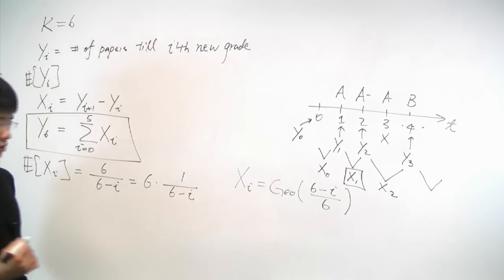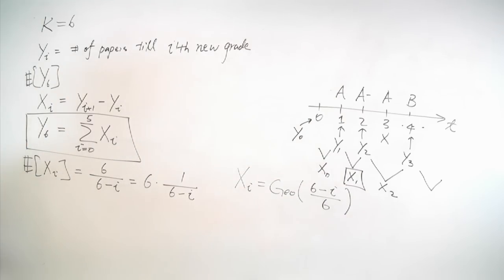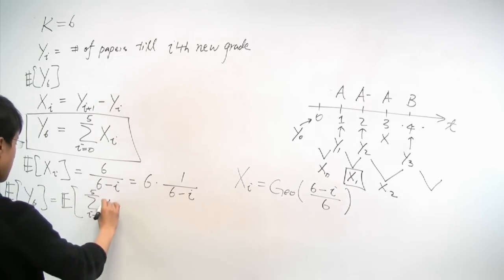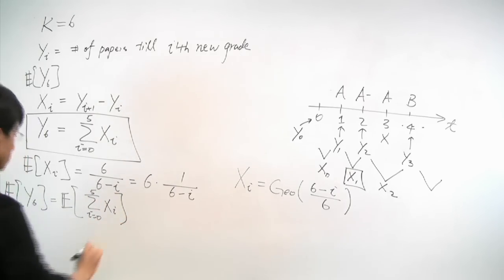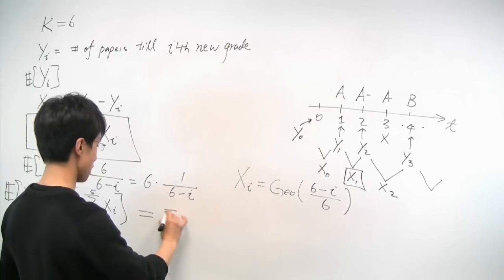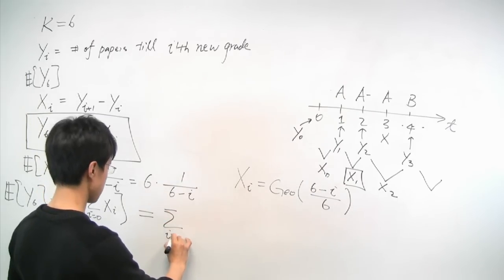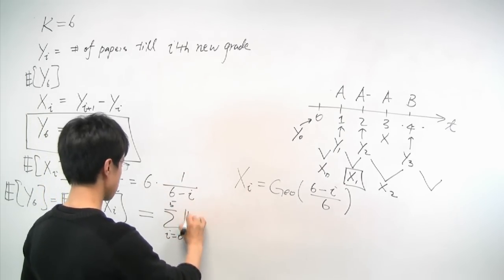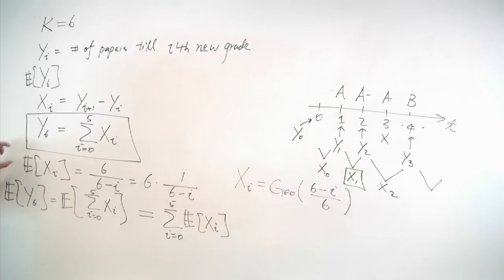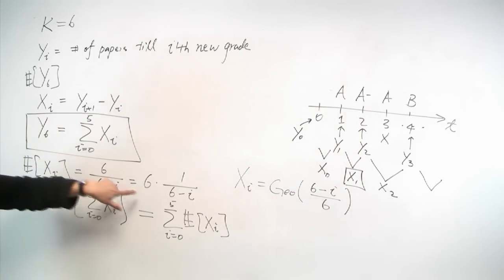And now we're ready to compute the final answer. So from this expression, we know expected value of y6 is equal to the expected value of sum of i equal to 0 to 5 xi. And by the linearity of expectation, we can pull out the sum and write it as sum from 0 to 5 of the expected value of xi.